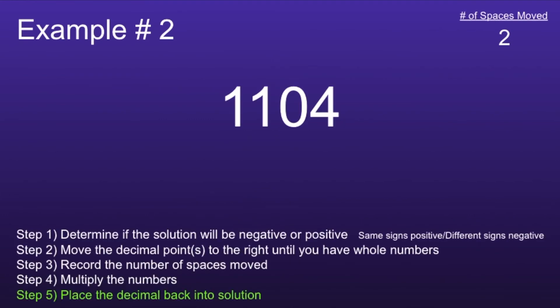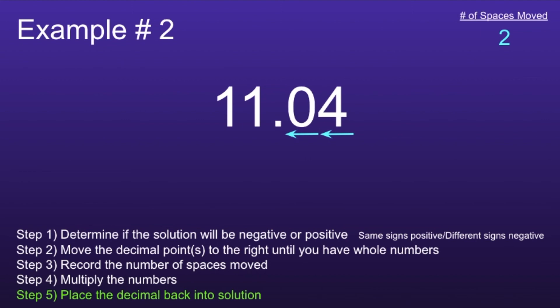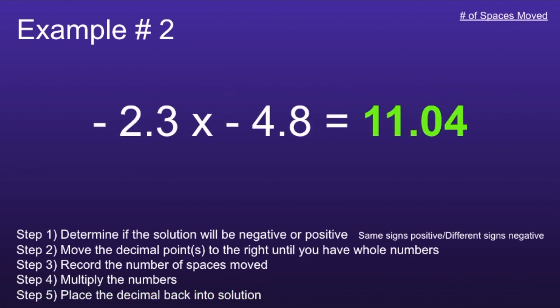This moves us on to the final step: place the decimal back into the solution. If we look at the top right, we can see that the number of spaces moved was 2, and we moved those two decimal points to the right. So now we have to move two spaces left in our answer, which gives us 11.04. So the final answer will be 11.04.